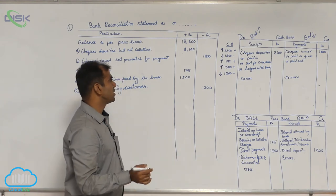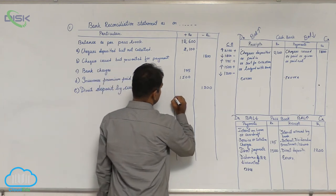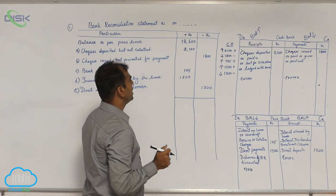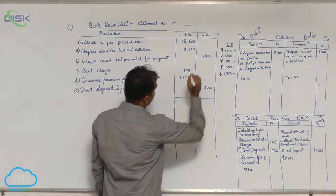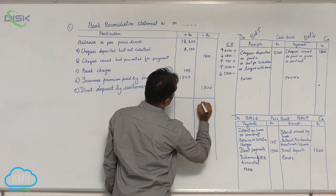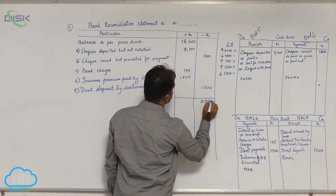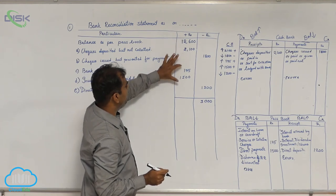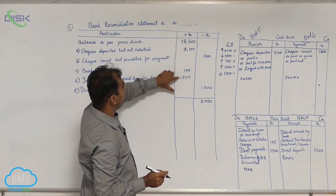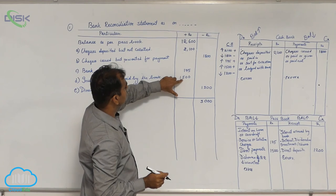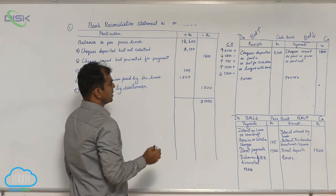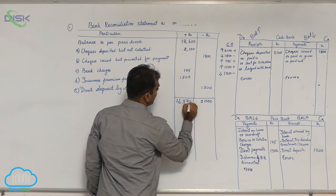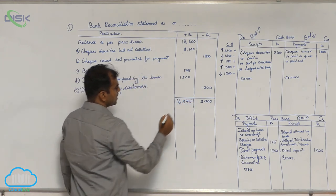Now close the BRS by totaling both columns. The minus column totals to 3,000. The plus column totals to 16,375. This gives you the balance of the cash book.